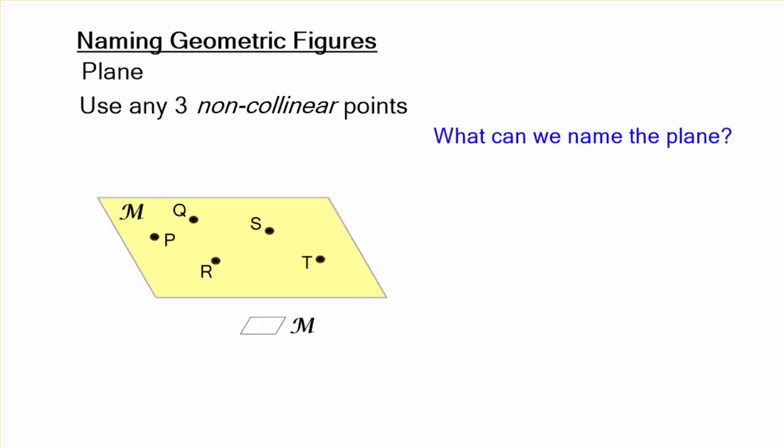Here, what can we name the plane if all the arrangements, all the different orders of the same three letters are treated as one name? Well, let's go ahead and just go in order. Let's go PQR. It could be named plane PQR, just use the symbol.